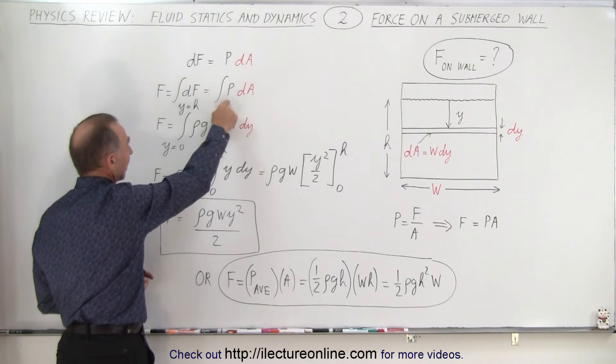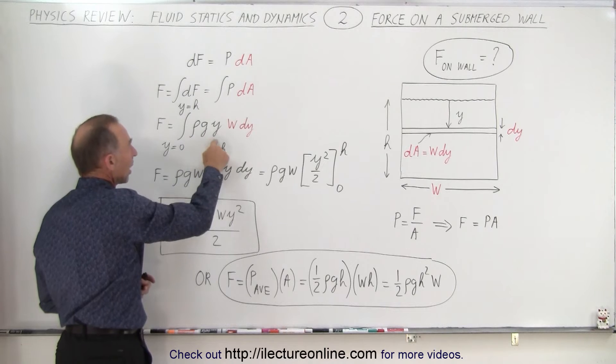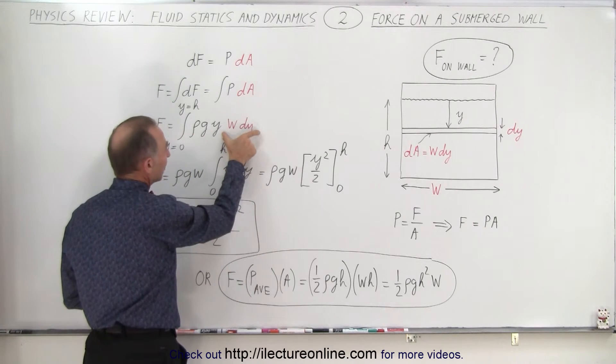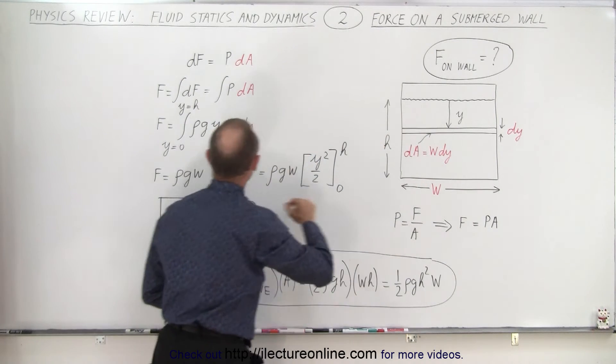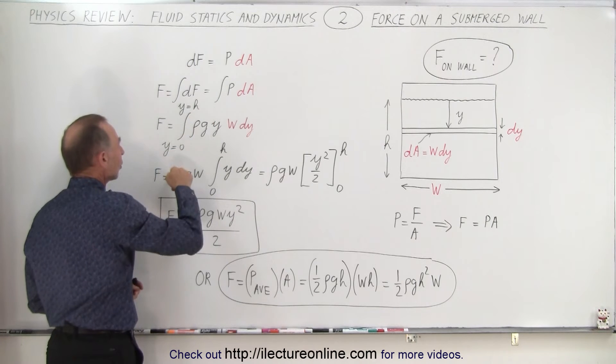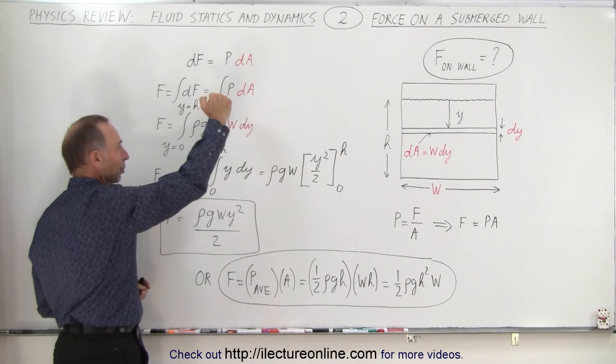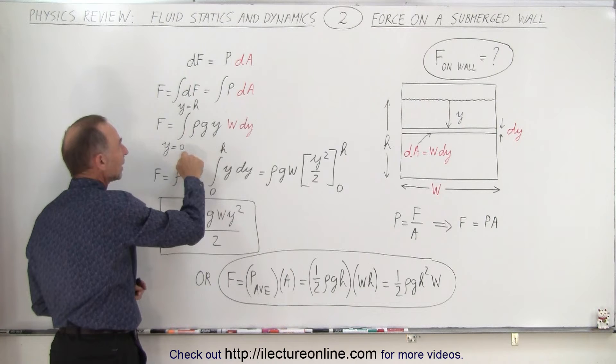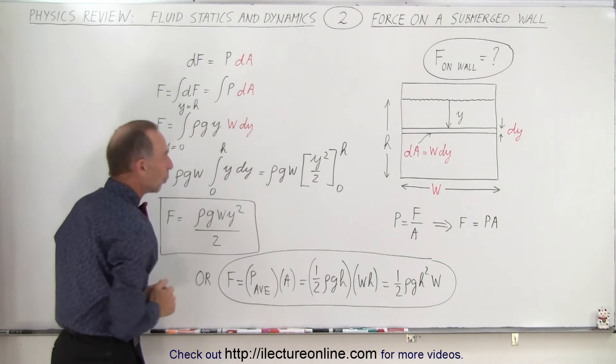And of course the pressure at that depth is going to be equal to rho g y. And that will then be the area of that small strip. And then if we integrate that all the way from 0, the top of the pool all the way down to the bottom, then we get the total force on the entire wall.